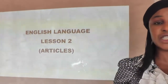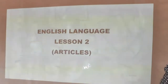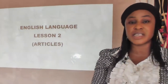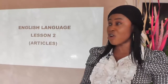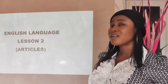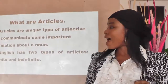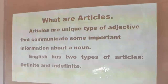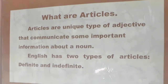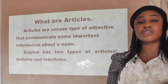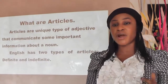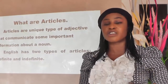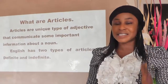In our last class we treated countable and uncountable nouns. And I told us that we'll be looking at articles and see how we can use them together with either countable or uncountable nouns. Now, what are articles? Articles are a unique type of adjective that communicates some important information about a noun. Articles refer to nouns. Remember the definition of your noun — nouns are naming words. Articles also specify definiteness.